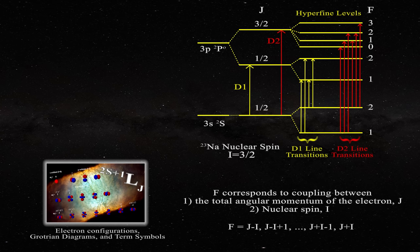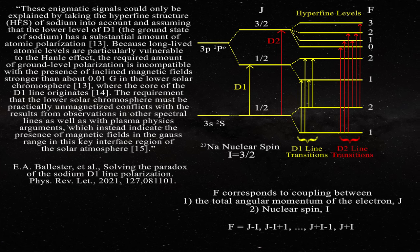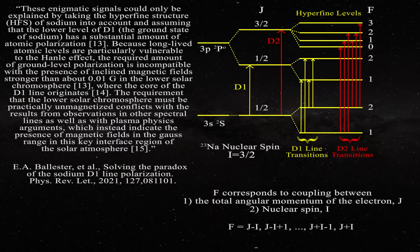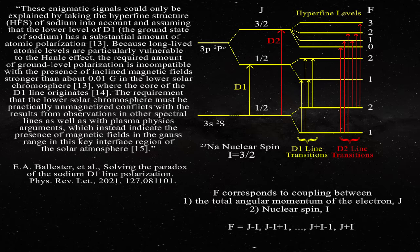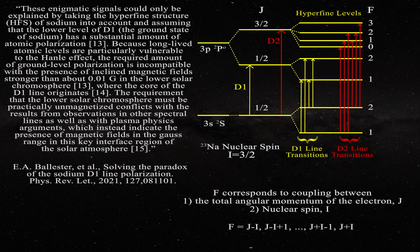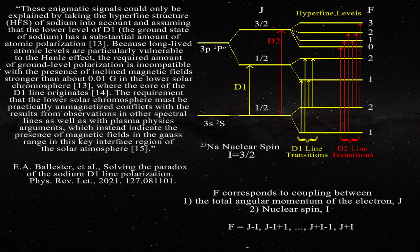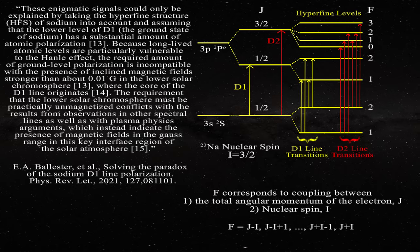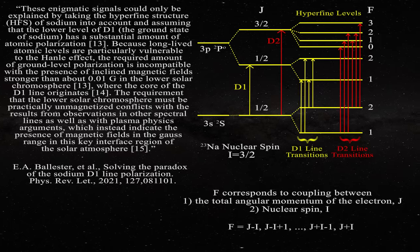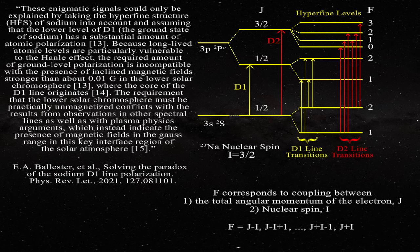In order to help understand the importance of hyperfine splitting relative to the sodium D1 line here is another quotation. These enigmatic signals could only be explained by taking the hyperfine structure of sodium into account and assuming that the lower level of D1 the ground state of sodium has a substantial amount of atomic polarization. Because long-lived atomic levels are particularly vulnerable to the Hanley effect the required amount of ground level polarization is incompatible with the presence of inclined magnetic fields stronger than about 0.01 Gauss in the lower solar chromosphere where the core of the D1 line originates. The requirement that the solar chromosphere must be practically unmagnetized conflicts with the result from observations in other spectral lines as well as with plasma physics arguments which instead indicate the presence of magnetic fields in the Gauss range in this key interface region of the solar atmosphere.